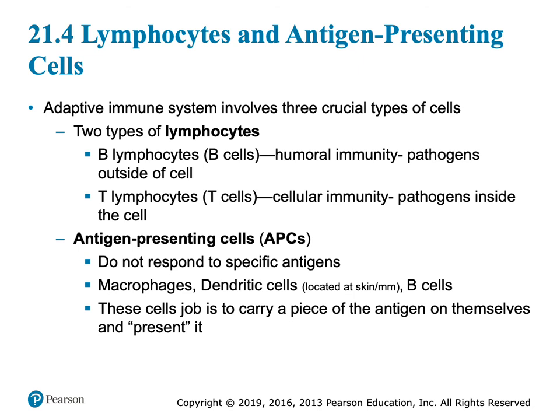T lymphocytes are called cellular immunity because they go after pathogens that have made it inside the cell, like the flu. That's two kinds of very important cells in adaptive immunity. Here's another one — some cells are going to bring pieces of the antigen. Those are called antigen-presenting cells.